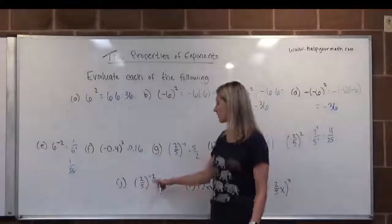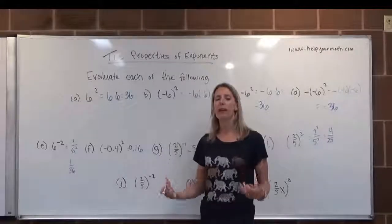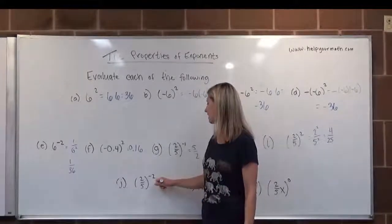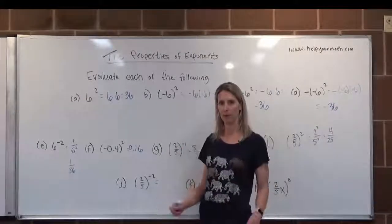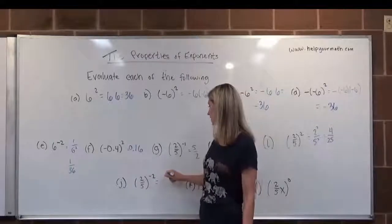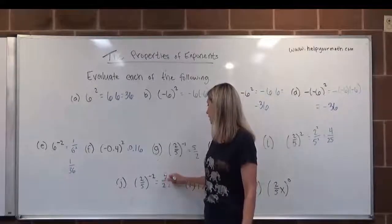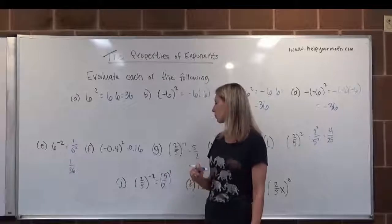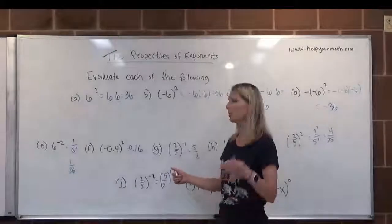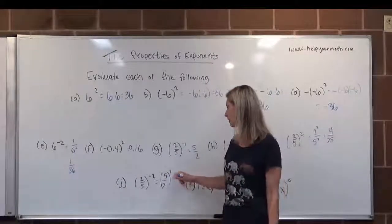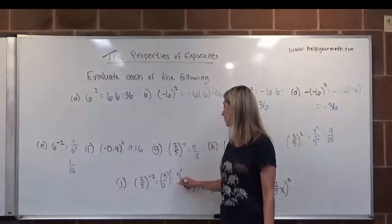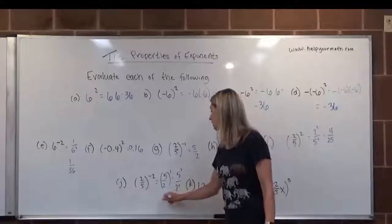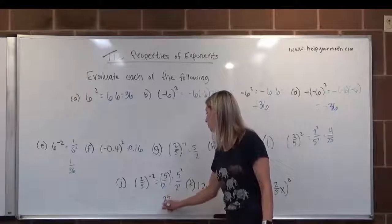Here we have 2 fifths to the negative 2. I would deal with the negative part of the exponent first. So that negative indicates it wants the reciprocal of the base, and the reciprocal of 2 fifths is 5 halves. And now when I write this, it's going to be 5 halves squared, because I haven't yet dealt with the 2 part of the exponent. So I'm going to distribute that now. That's going to be 5 squared over 2 squared, and that would be 25 over 4.